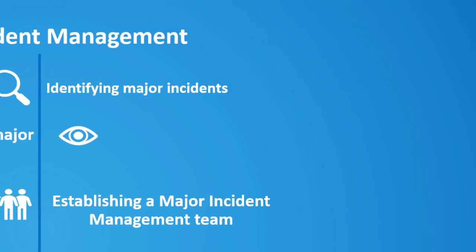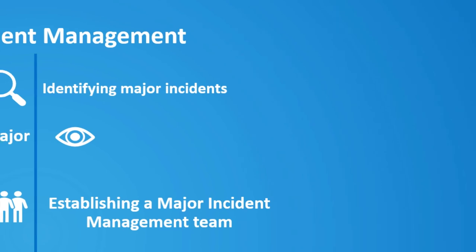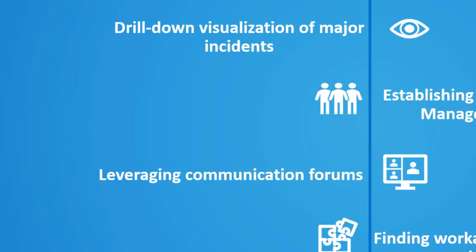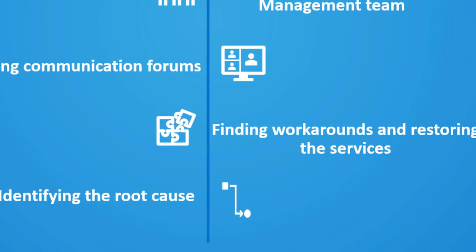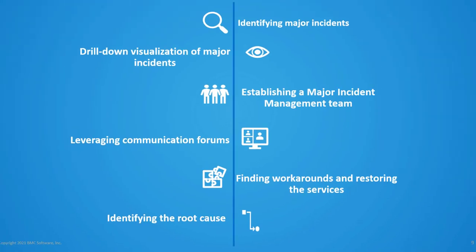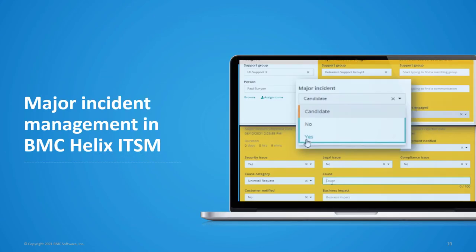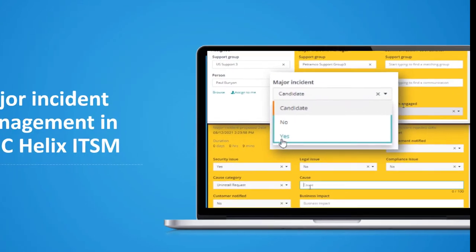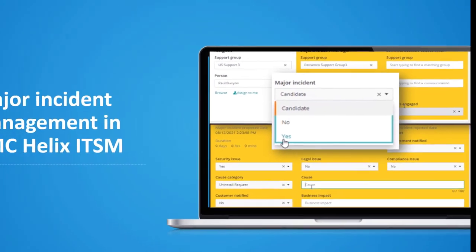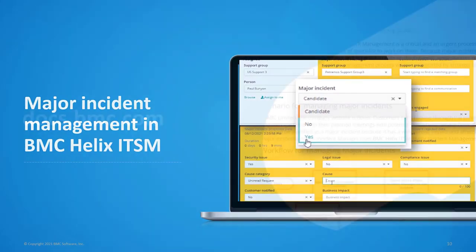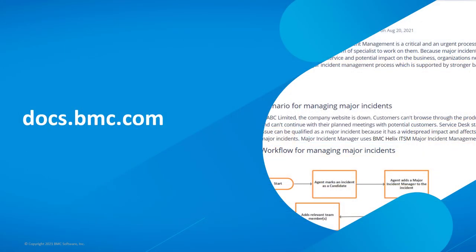In general, identifying, resolving, and preventing major incidents are the three basic steps of major incident management processes. Major incident management in BMC Helix ITSM follows this industry standard process to manage and track major incidents on the same incident management screen.